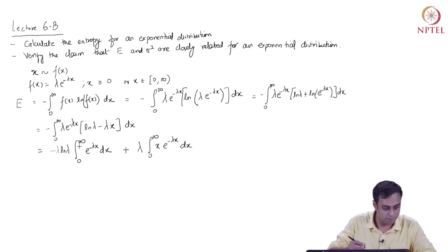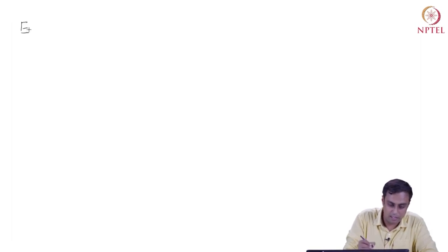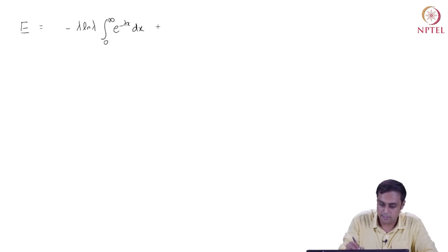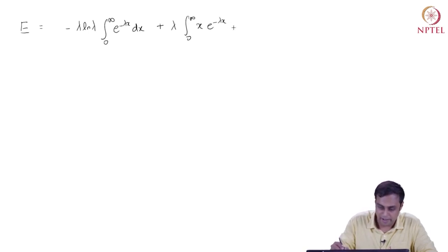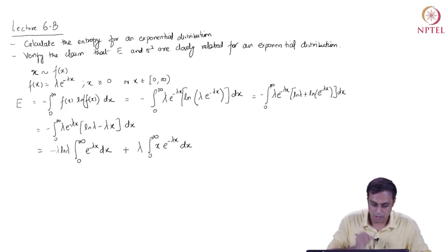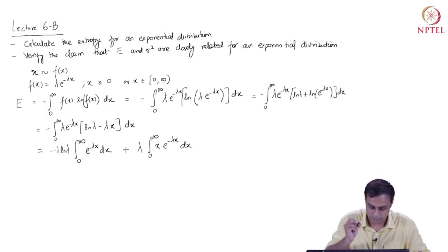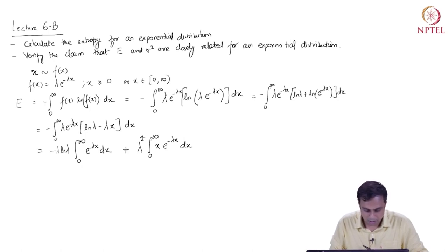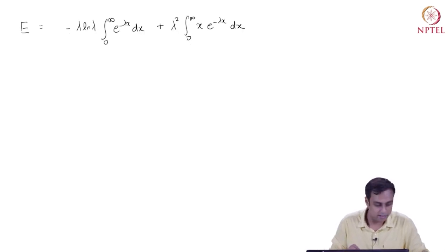So we have the entropy measure with us now. Writing it again: E equals minus λ ln λ times the integral from 0 to infinity of e^{−λx} dx, plus λ squared times the integral from 0 to infinity of x e^{−λx} dx. Checking the calculations — the first one is correct, and the second should have λ squared. This looks good.